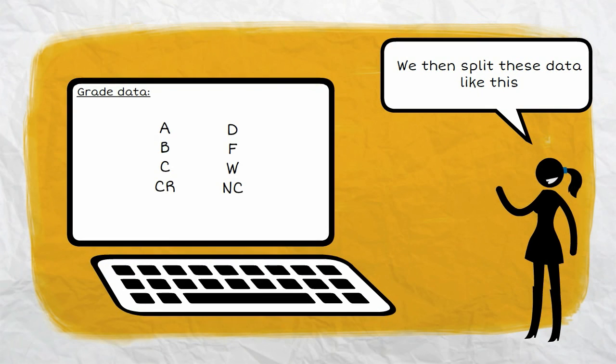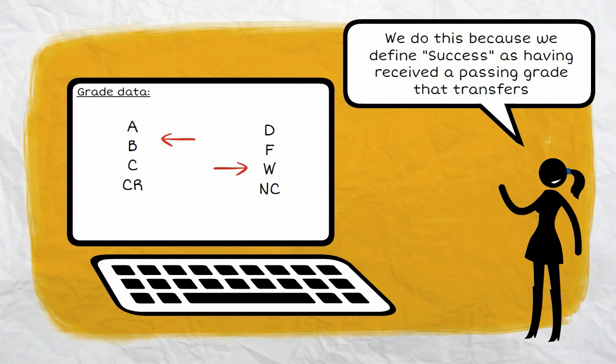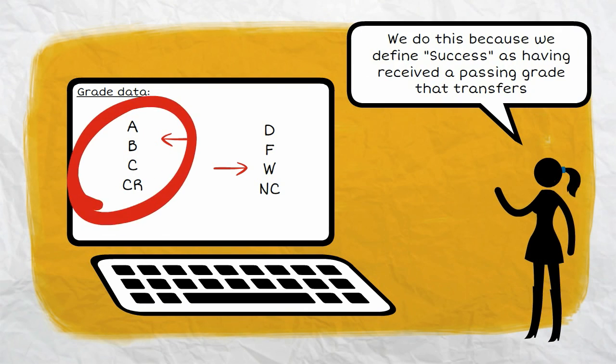We then split these data like this, ABC-CR or DFW-NC. We do this because we define success as having received a passing grade that transfers.